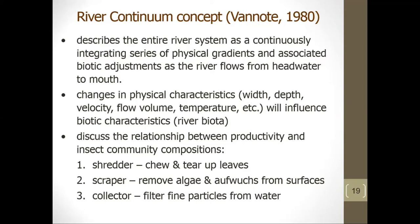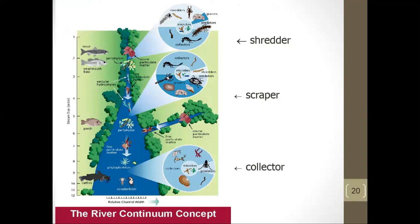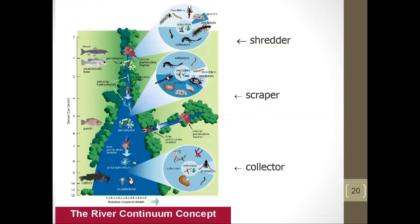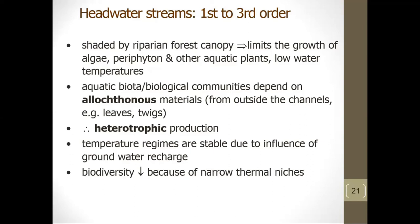The River Continuum Concept (RCC) is an attempt to generalize and explain longitudinal changes in the stream ecosystem. It identifies connections between the watershed, floodplain, and stream system, and describes how biological communities develop and change from the headwaters to the mouth. The RCC can place a site or reach in context within a larger watershed or landscape, helping practitioners define and focus restoration goals. From headwaters to river mouth, the relative channel width expands and insect communities shift among shredder, scraper, and collector functional groups.